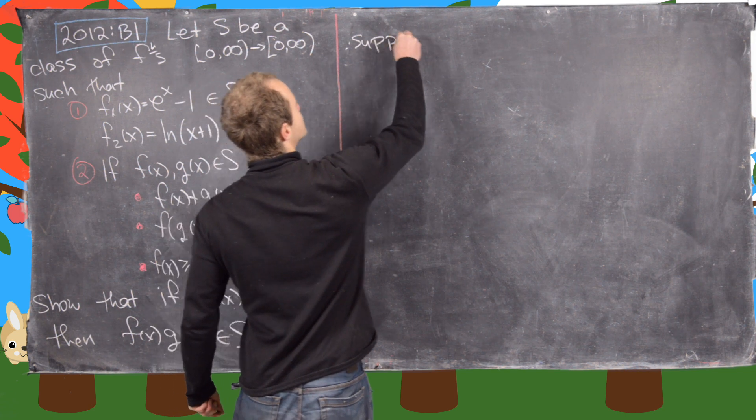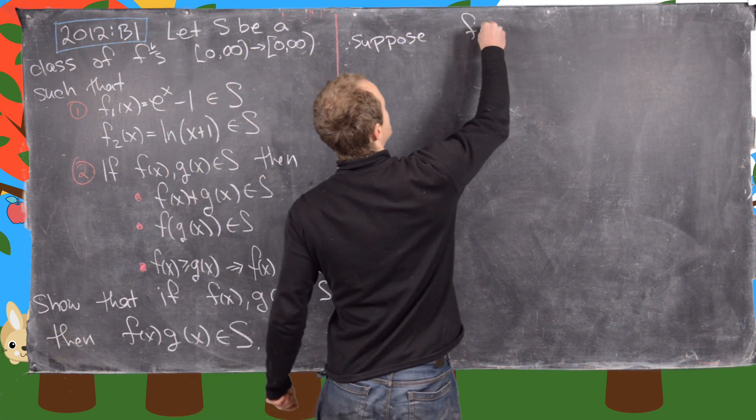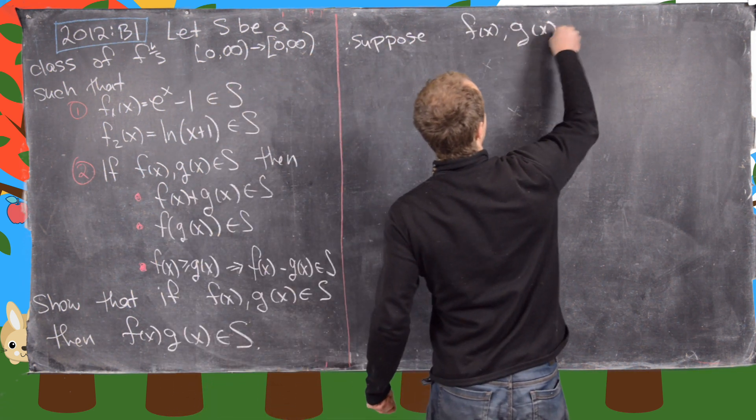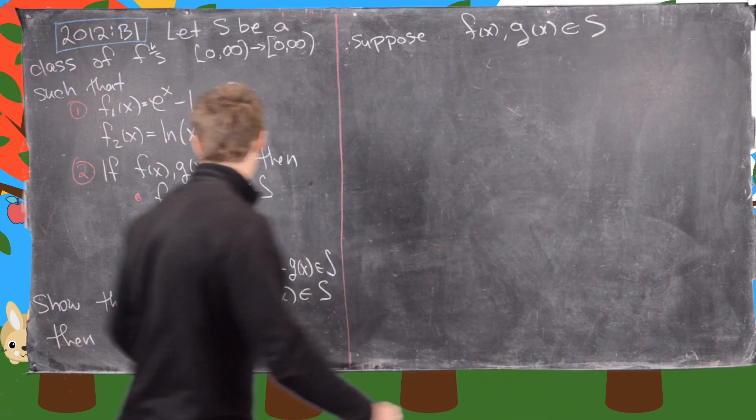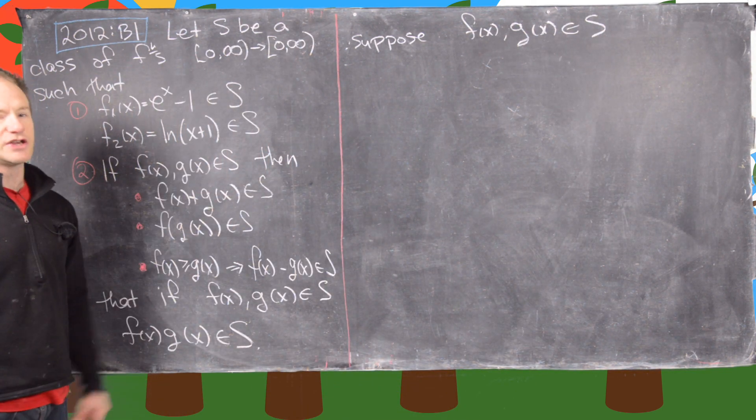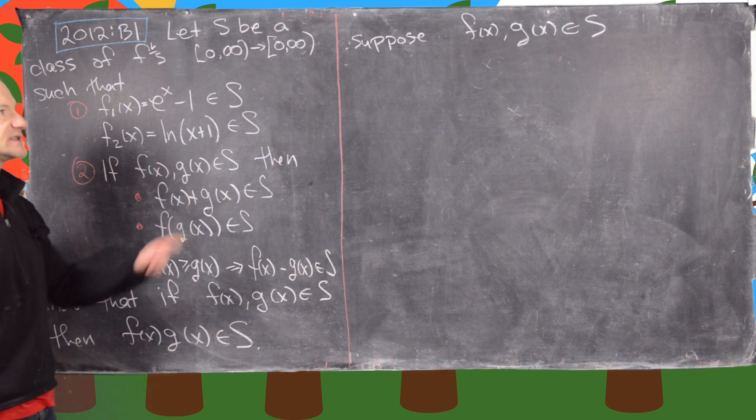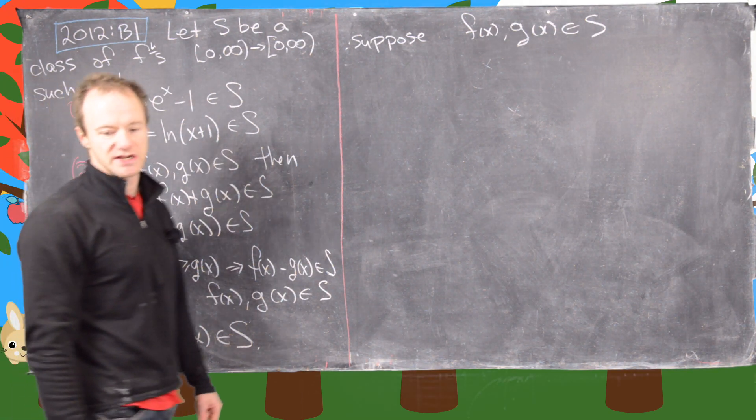So let's suppose that f of x and g of x are in S, and now we're going to apply these characteristics of S to continually get new functions in S until we have f times g in S.